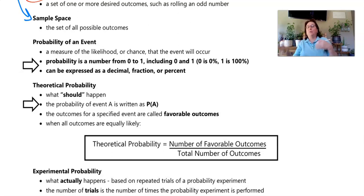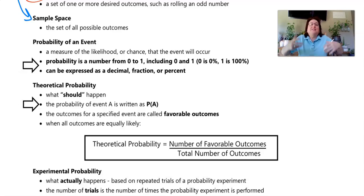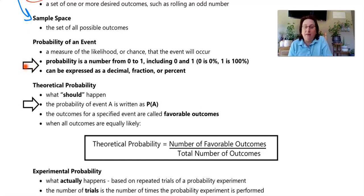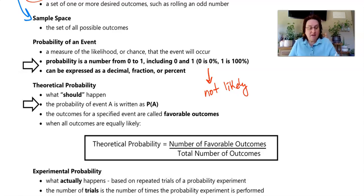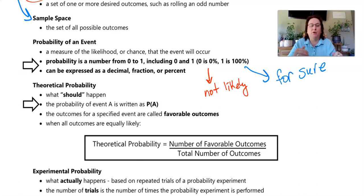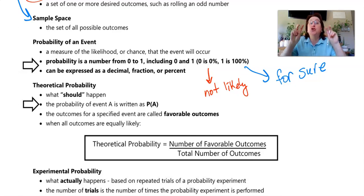You guys have already explored the probability of an event, theoretical probability, and experimental probability. The official definition of probability of an event is the likelihood or chance that that event will occur. The probability will be a number between zero and one — zero means a zero percent chance, it's completely unlikely, and one represents one hundred percent, meaning it is certain to happen. We express probabilities as a decimal, a fraction, or a percentage.